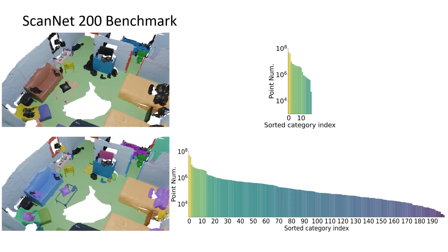To analyze performance on this new task, we split the categories into head, common, and tail categories based on their frequency of appearance.